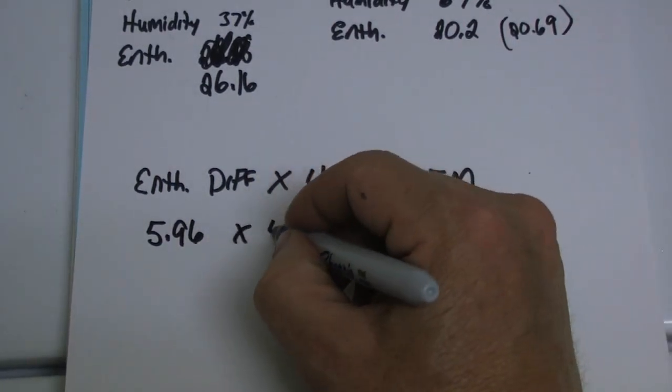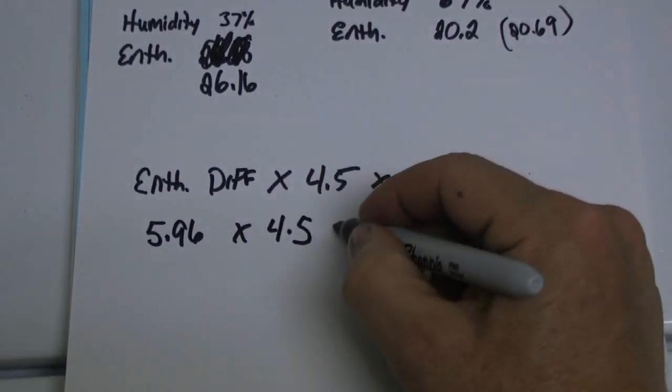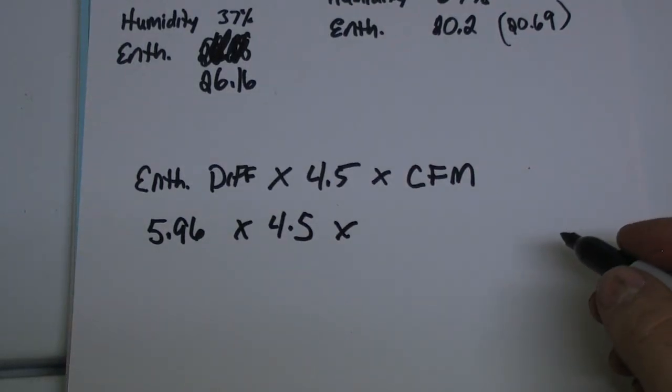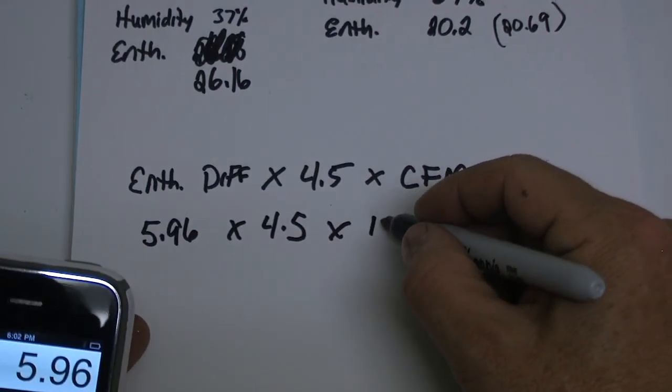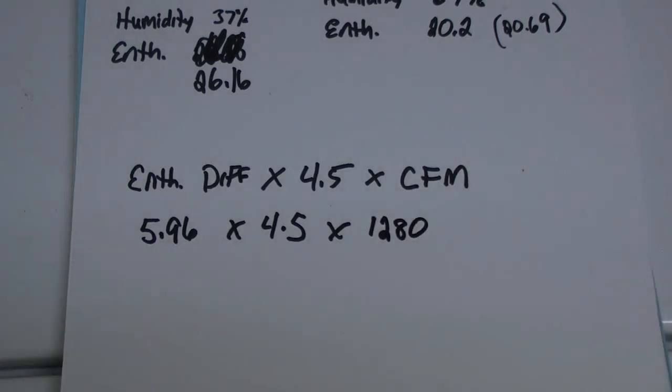So it's going to be times 4.5 times CFM. We're going to use 1280. That's pretty close to what we had. I didn't write down the CFM so I don't remember what it was now, but that was pretty close to what it was.